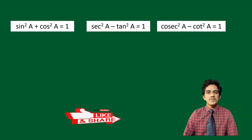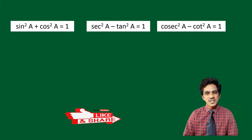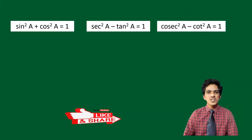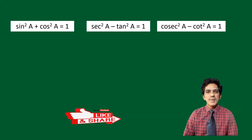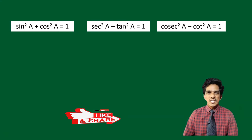Now, to solve any of these problems, we need these three trigonometric identities. These identities are not available in the previous tutorial. Sin square a plus cos square a is equal to 1. Secant square a minus tan square a is equal to 1. And cosecant square a minus cot square a is equal to 1.